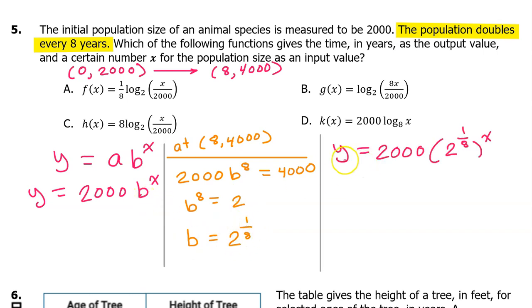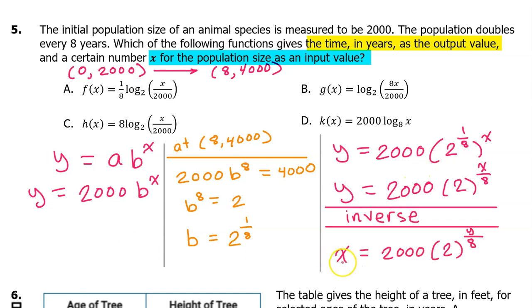Substituting this value for b, we have y = 2000 times 2 to the 1/8th power to the x power. When you raise a power to a power, you multiply. So this can be written as 2 to the x/8 power. This model gives the population of the species after x years. In other words, the input is the time in years, and the output is the population. If we want the time to be the output value and the population to be the input value, we need to switch x and y. In this form, x represents the population and y represents the time. We just need to solve this equation for y and see which answer choice it matches.